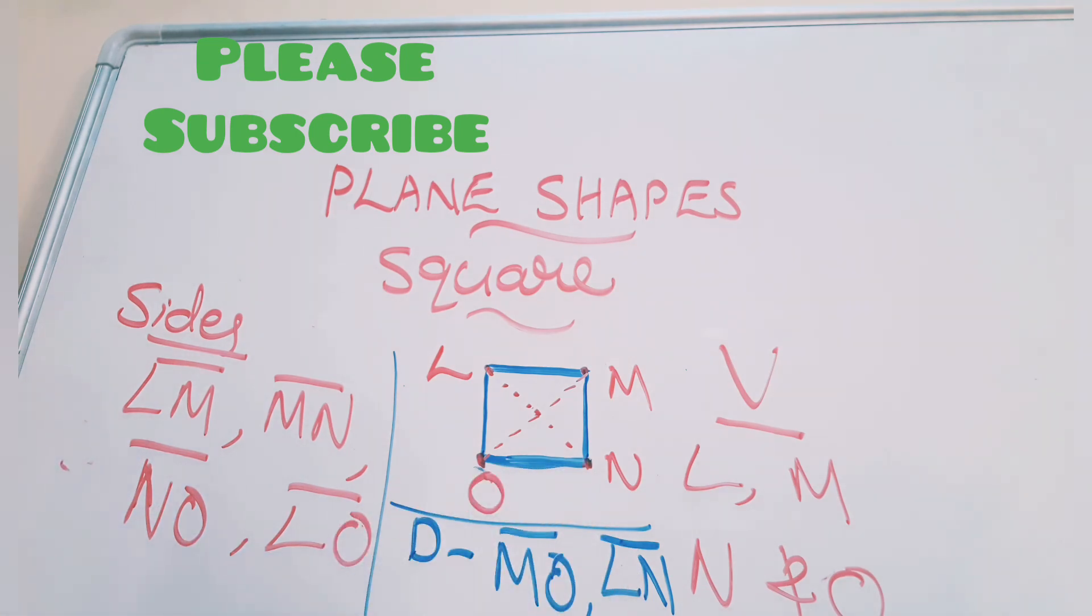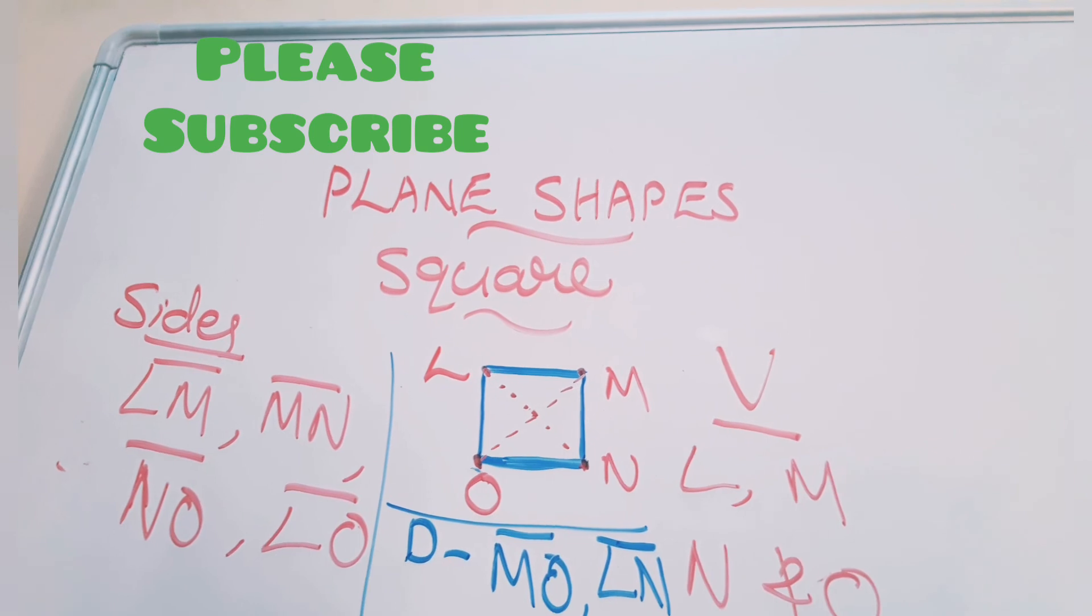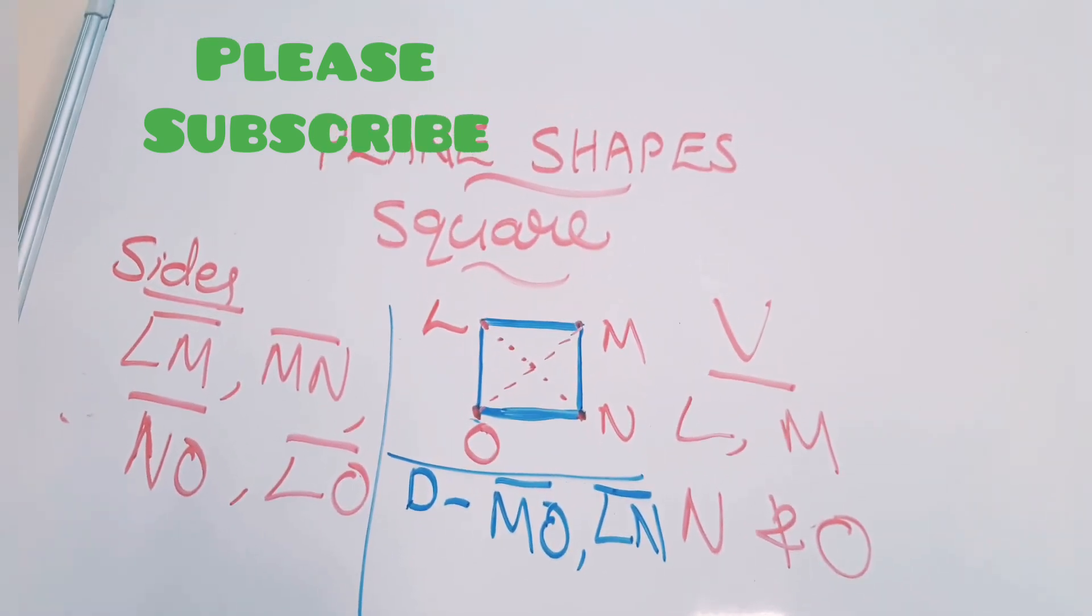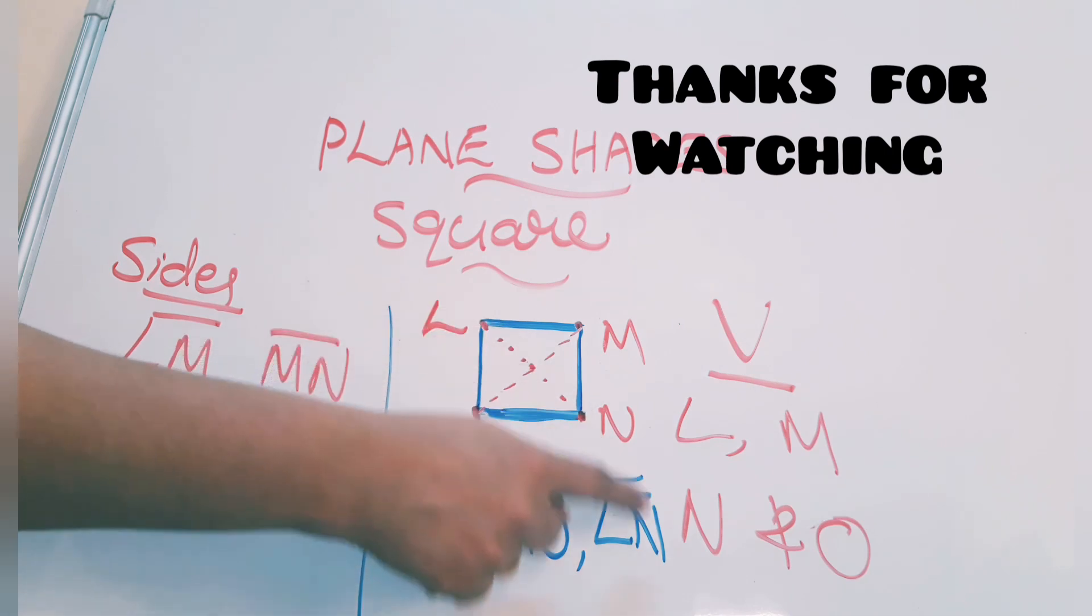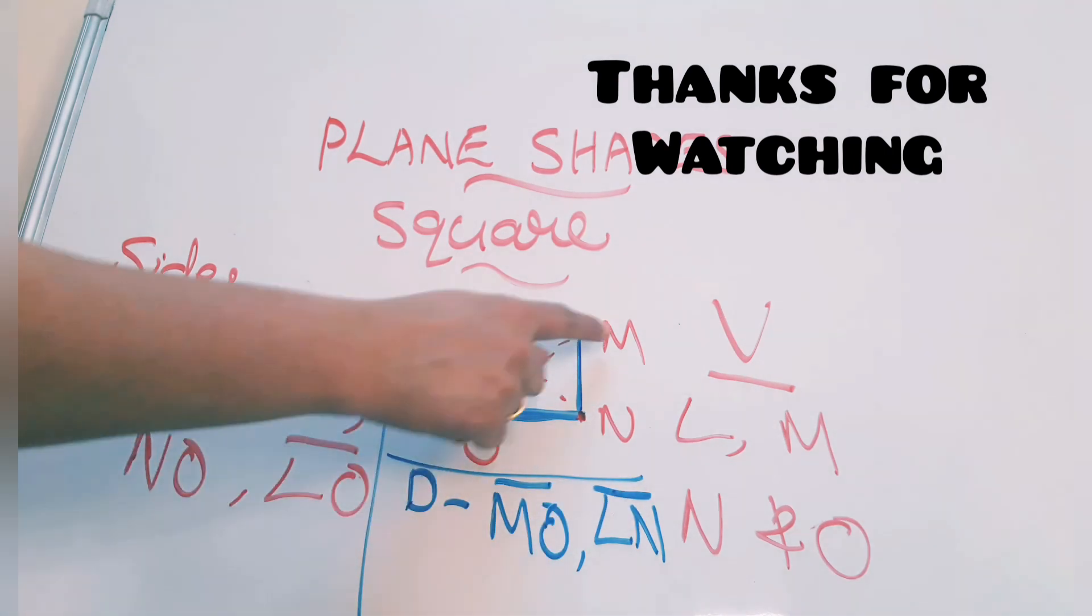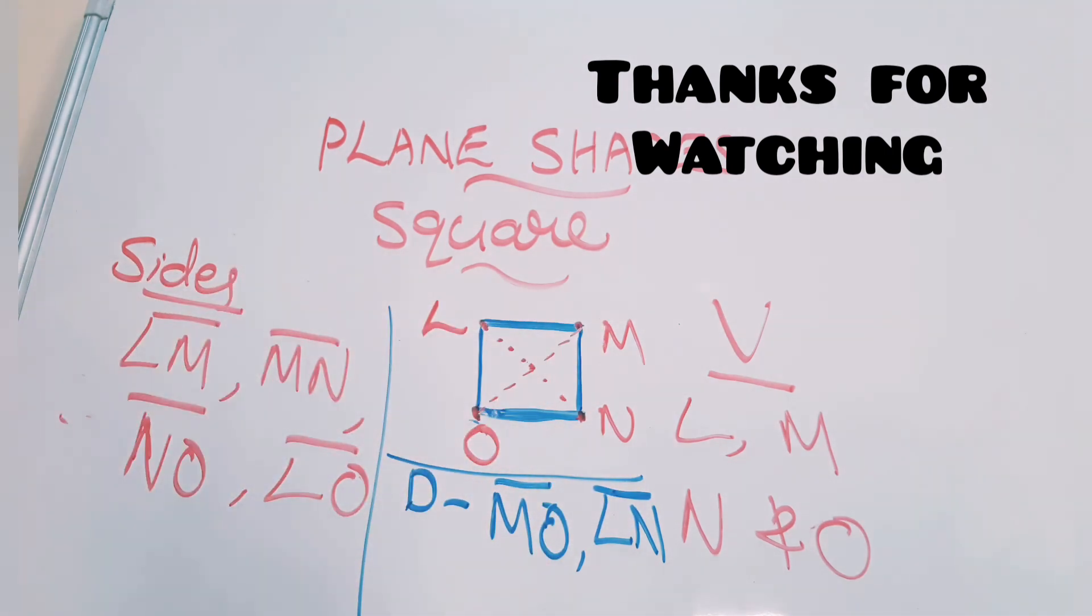See here. MO, diagonals. Then LN, other diagonal. Diagonal 1, diagonal 2. There are two diagonals. These two diagonals are also in equal length. Thank you.